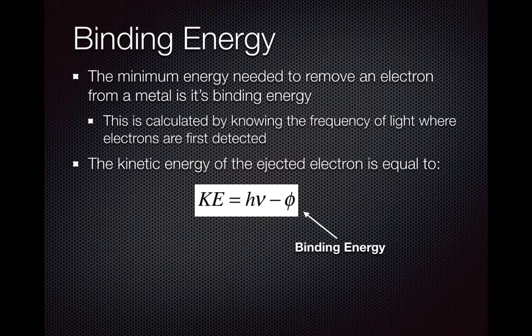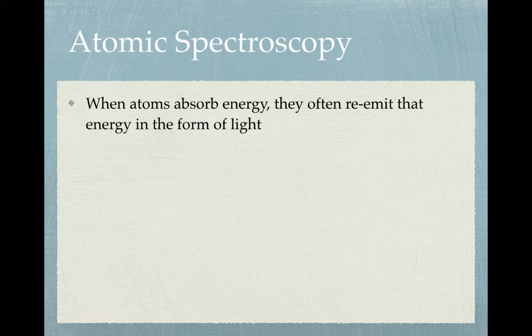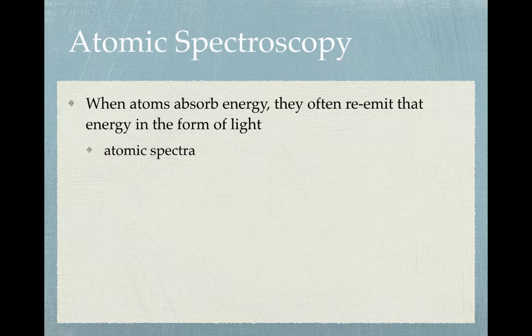Let's talk a little about atomic spectroscopy. Any time an atom absorbs energy, it puts the atom into a higher energy state, which makes it more unstable. It wants to go back to a more stable, lower energy state, and in order to do that, it has to give off the energy it had absorbed — often in the form of light. As a result, we get things called atomic spectra.